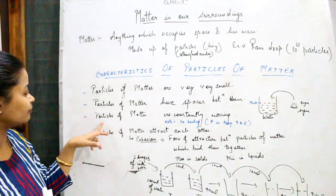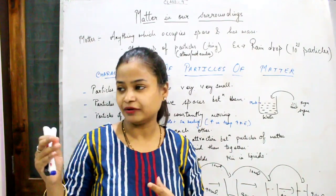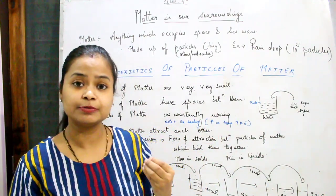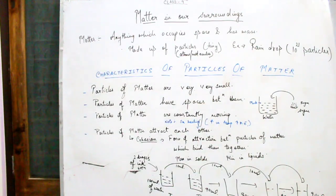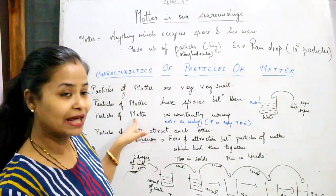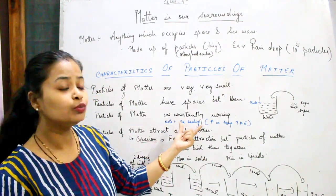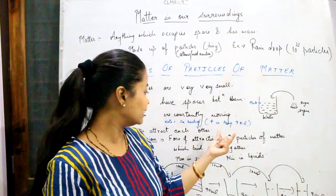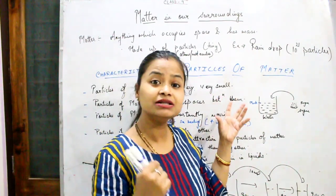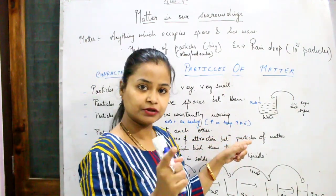The third characteristic is: particles of matter are constantly moving. If you light an incense stick at one corner of a room, the entire room will get the fragrance. Similarly, if some food is being cooked somewhere far off, you can smell it from a distance — this is because particles of matter are constantly moving. One more point: when you heat matter, that is, on increase in temperature, the kinetic energy (KE) of these particles will increase and they will move faster. Kinetic energy is the energy associated with the motion of particles.